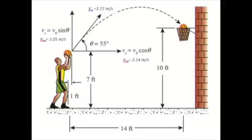Depending on the distance from the hoop, a certain angle and velocity will be needed for the basketball to hit the net. Velocity is essentially the same thing as speed and is measured in meters per second. When you first throw a basketball, the speed with which it first moves is its original velocity. For example, if a 7-foot player was 14 feet away from a 10-foot hoop, he would need to throw the basketball with an original velocity of 3.72 meters per second at an angle of 55 degrees to make the shot in 2 seconds.